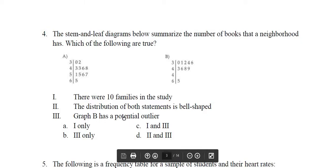Statement three: Graph B has a potential outlier. Yep, 5 seems to be far away from the rest of the numbers, far away enough that we could consider it an outlier. So I would say that three is true, so the answer here should be B, three only. That's it.